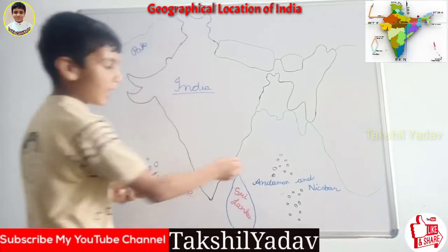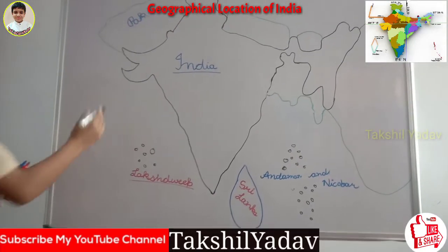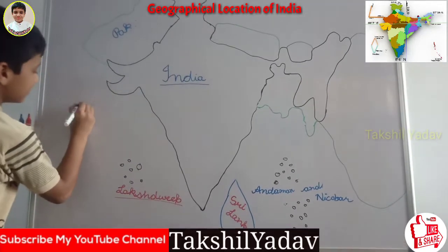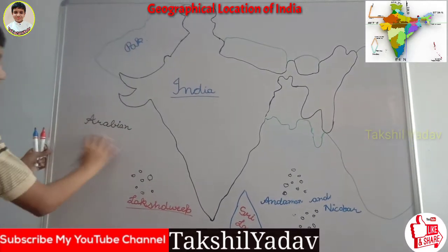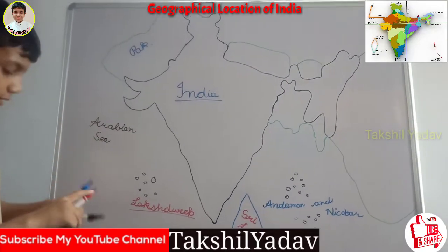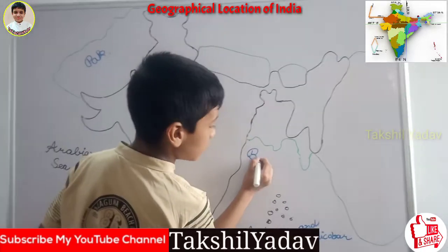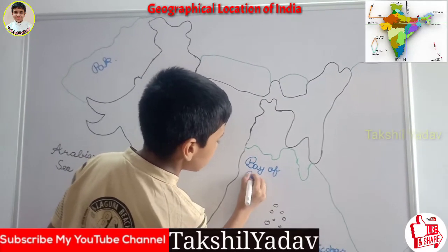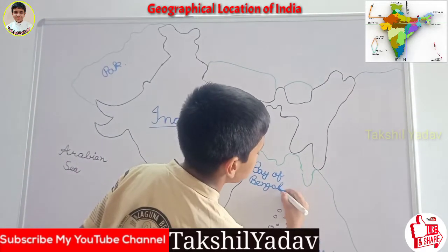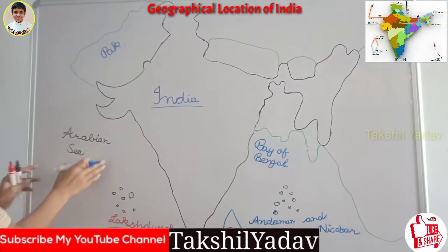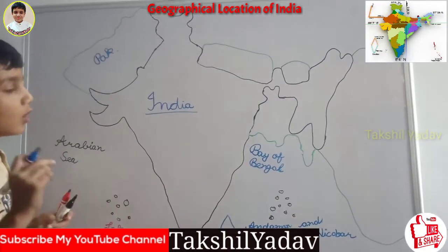You can see that this is the Arabian Sea on the west side. And on the east side we have the Bay of Bengal, which is named after West Bengal, a state of India.